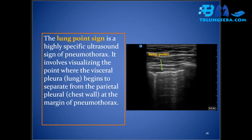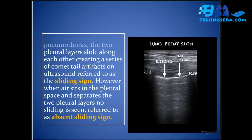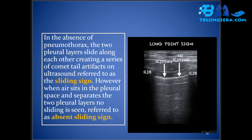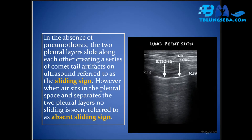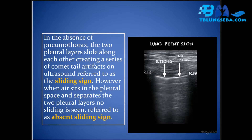The lung point sign is a highly specific ultrasound sign of pneumothorax, involving visualization of the point where the visceral pleural lung begins to separate from the parietal pleural chest wall at the margin of the pneumothorax. In the absence of pneumothorax, the two pleural layers slide along each other, creating comet tail artifacts referred to as the sliding sign. When air sits in the pleural space and separates the two pleural layers, no sliding is seen, referred to as the absent sliding sign.